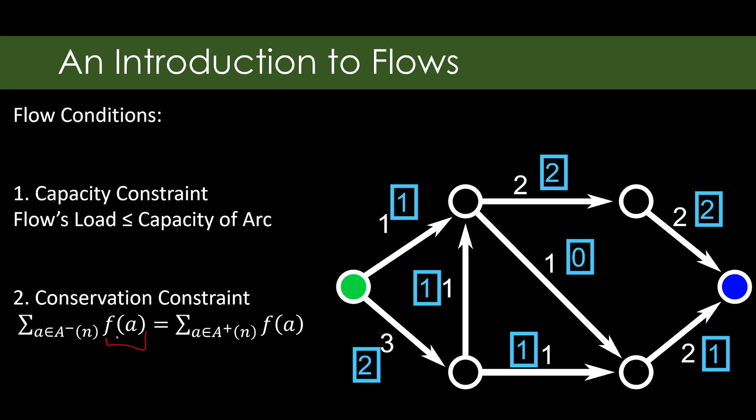First, this is the flow on an arc. So if I pass it this arc, the function would give me one. If I pass it this arc, the function would give me zero. This one, two. And so on.